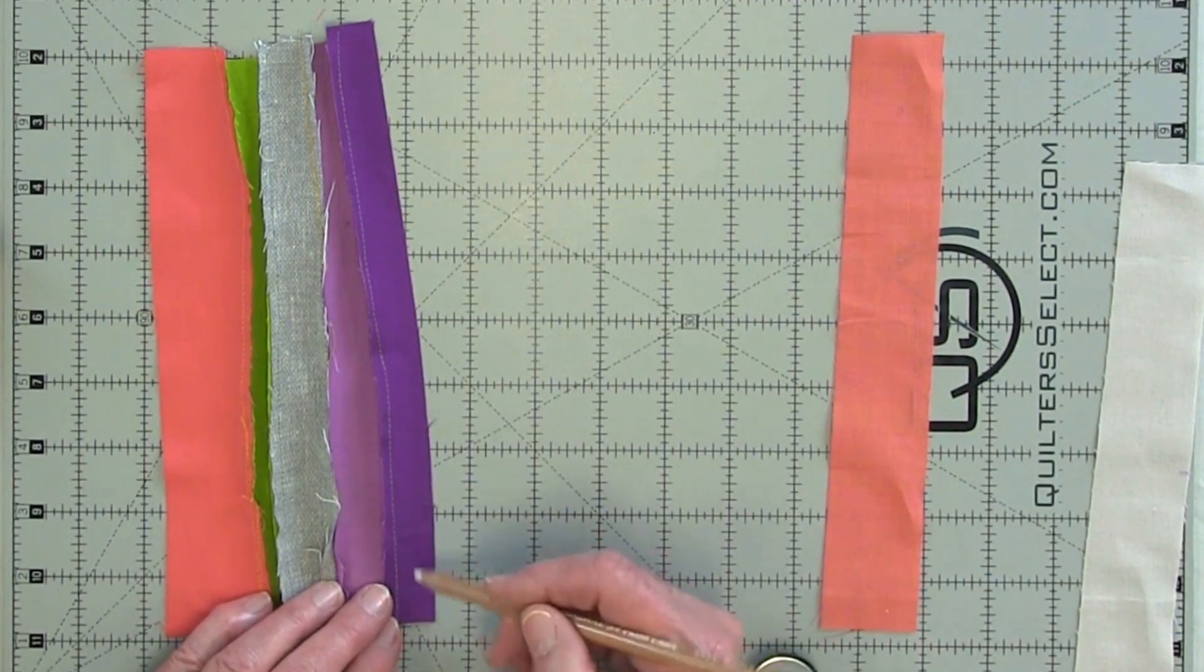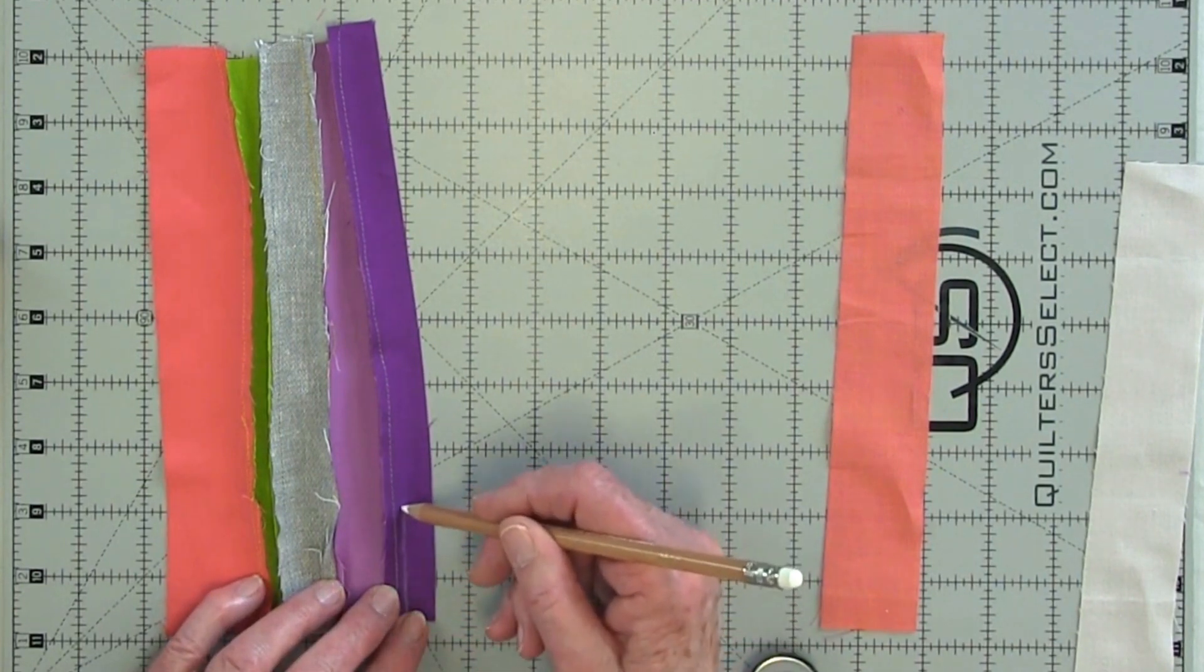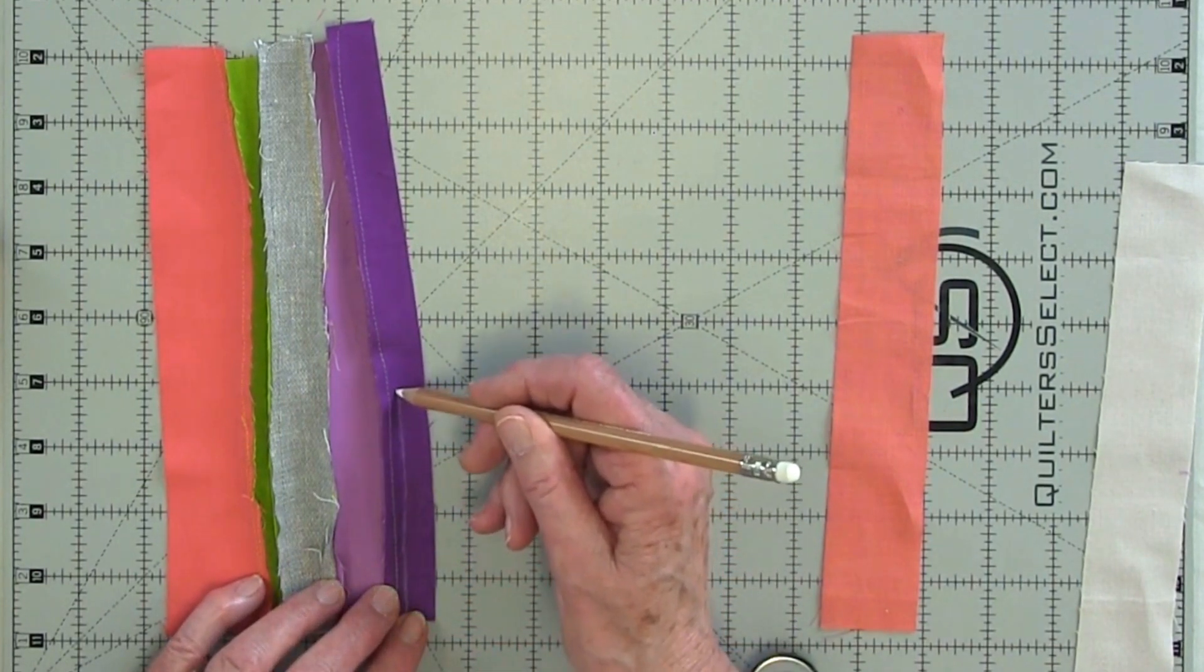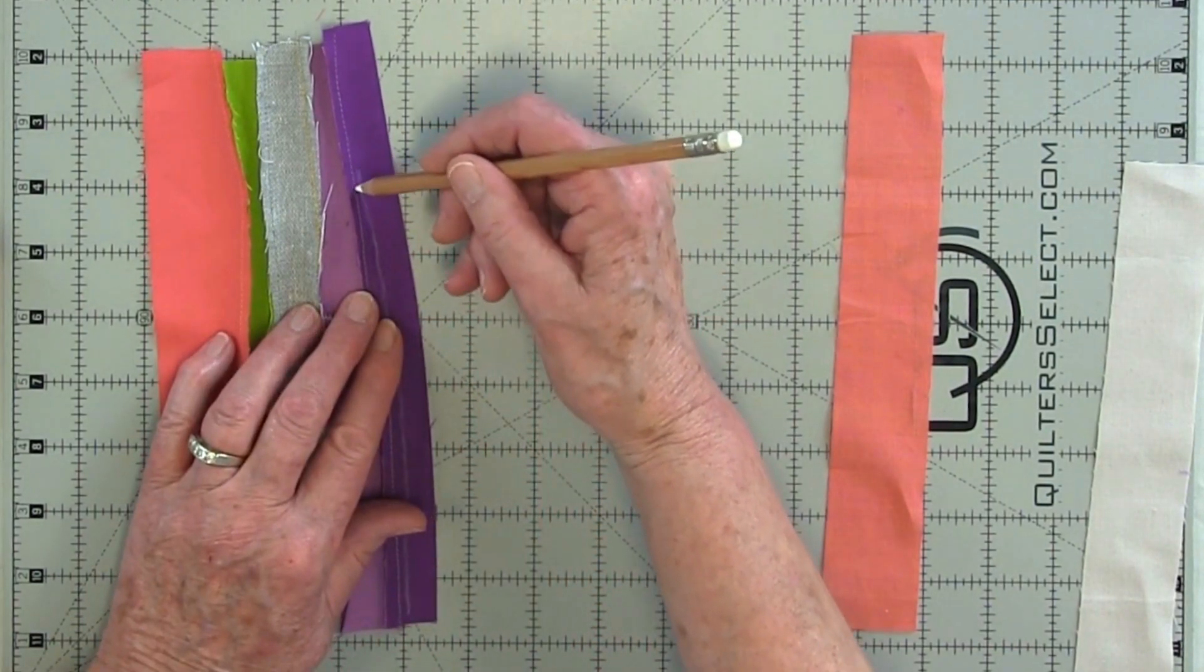You can put your pencil mark so that it angles out a little bit, then maybe comes back in. And if you want it to disappear, you can draw your line right beside that seam.